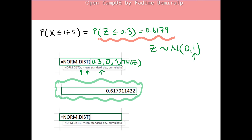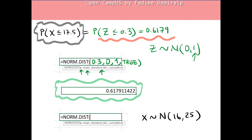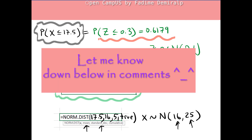Why don't you try using this Excel function with the original distribution of X to answer the original question? The first argument will be 17.5, the mean of X is 16, the standard deviation of X is 5 (the square root of the variance), and type TRUE. Tell me what you get.